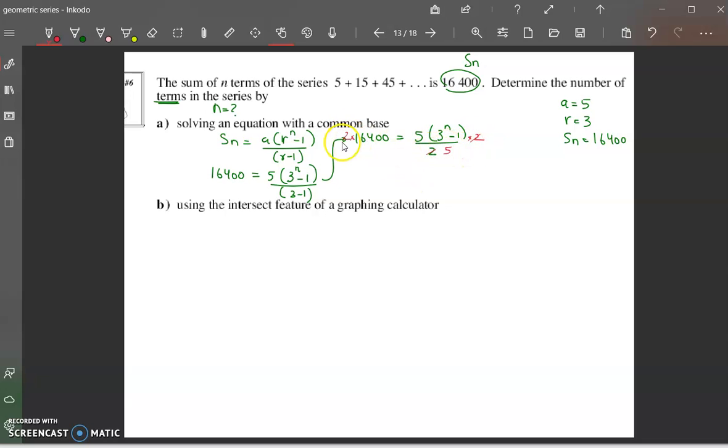And I also will divide both sides by 5 so that I can get rid of this. So what does that give me? That gives me, so I am doing 2 times 16,400 divided by 5, and that should give me 6561 equals 3 to the n minus 1.